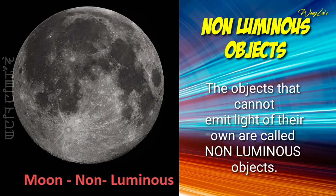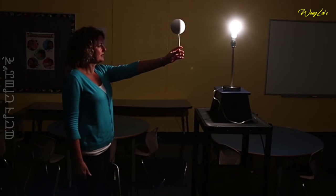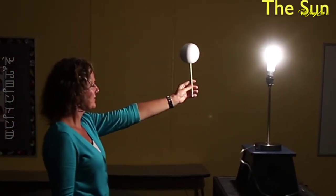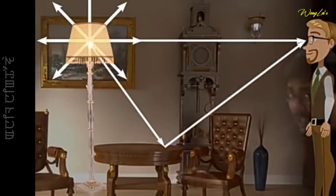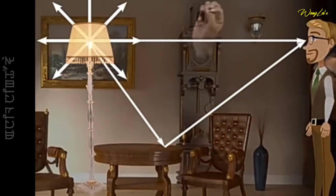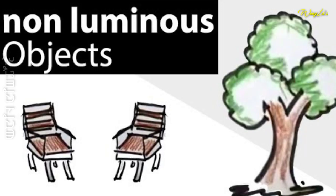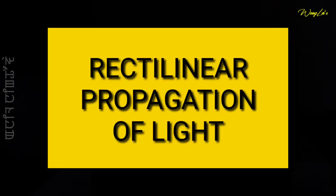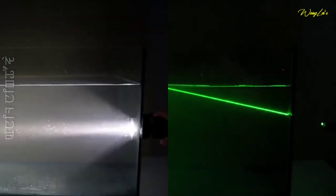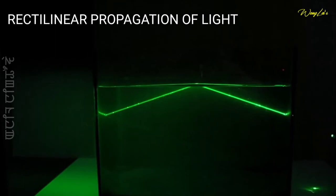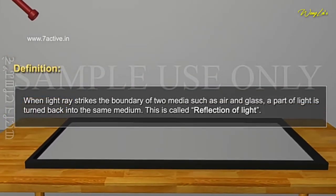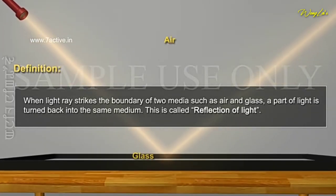When you use luminous objects, it is enough — you cannot paint it more easily. In this case, the light is a non-luminous object. The other properties include the rectilinear propagation of light, whereas the light is a non-luminous object that opens.